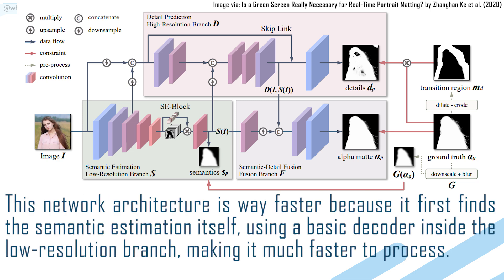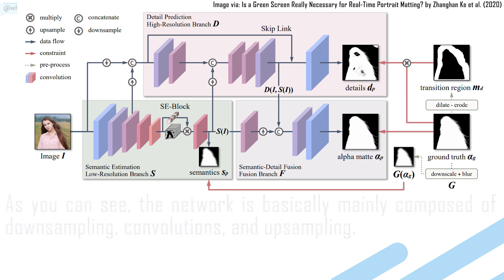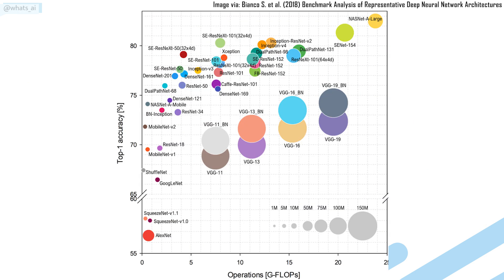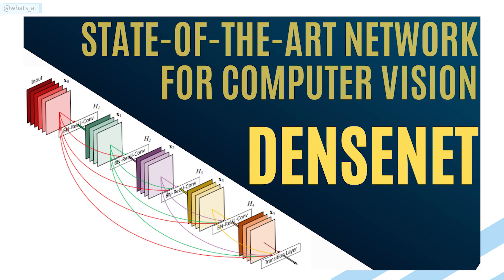This network architecture is way faster because it first finds the semantic estimation using a basic decoder inside the low-resolution branch. As you can see, the network is mainly composed of down-sampling, convolutions, and up-sampling. An arbitrary CNN architecture can be used for the convolutions — in this case they used MobileNet V2 because it was made for mobile devices. It is a small and extremely efficient network compared to other state-of-the-art architectures. The down-sampling and fewer convolutional layers in the high-resolution branch further reduce computational time.